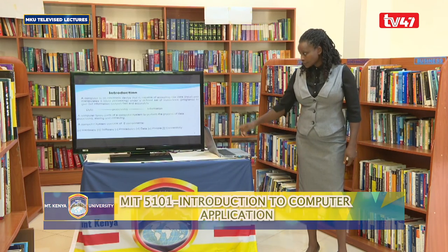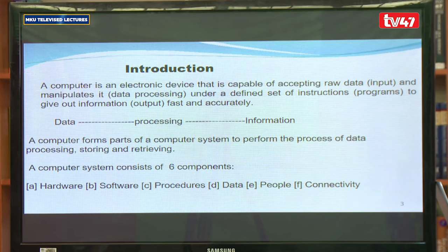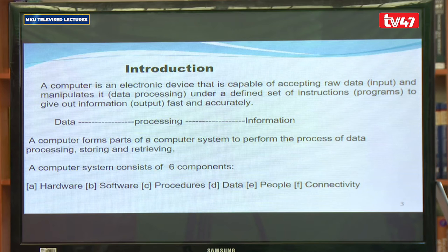Computers will be able to do this when we understand what they are composed of. A computer system has six components for it to move from data to processing to information. The first component is hardware — these are the tangible parts of a computer: the desktop, digital camera, scanner, and all those physical gadgets that you use to capture data and facilitate computing.